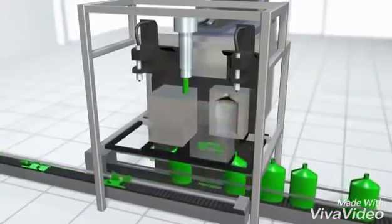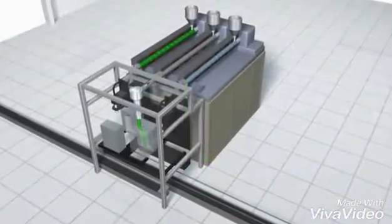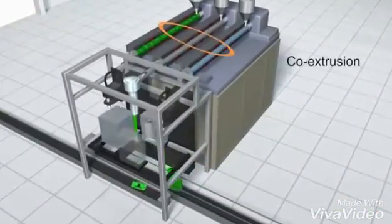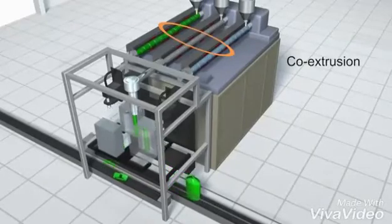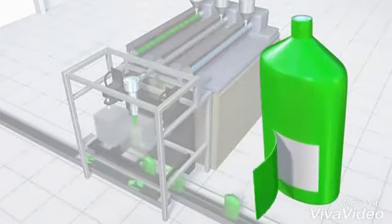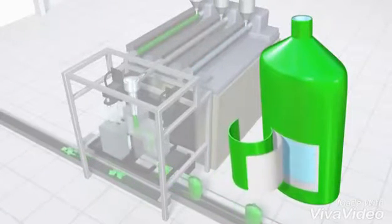The same blow molding process can also utilize multiple extruders for what is called co-extrusion. Co-extrusion is used to create bottles made up of multiple layers and each layer possesses special characteristics like suitability for food contact.